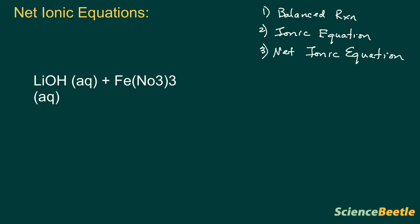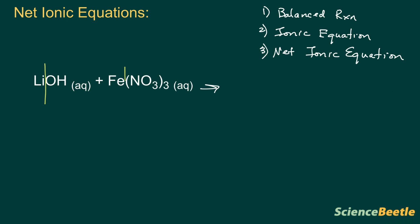So we have lithium hydroxide aqueous added to iron nitrate, with the nitrate being NO₃. The easiest way to work through this is to go ahead and identify the cation versus the anion. We're going to divide it here — this is going to be the positive side, this is the negative for lithium and hydroxide — and over here positive and negative.